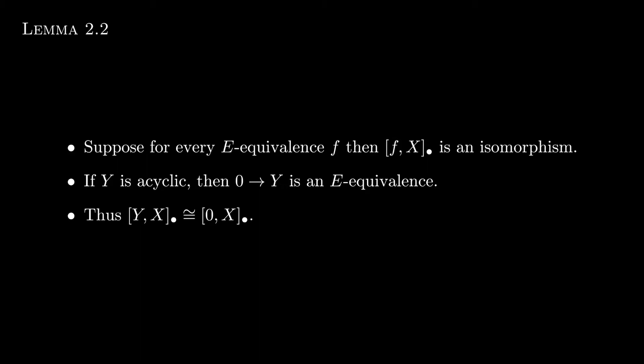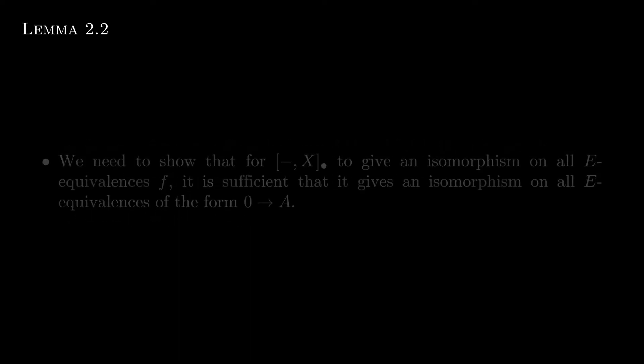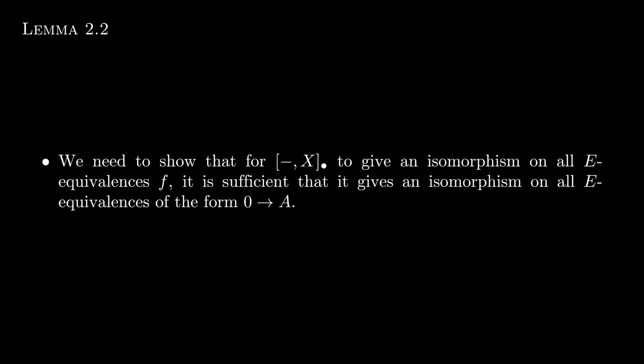So taking, for instance, the 0 dimension, we see that every morphism from Y to X is trivial. So let's see the other direction. Suppose every map out of an E-acyclic spectrum Y is 0 in the stable homotopic category.